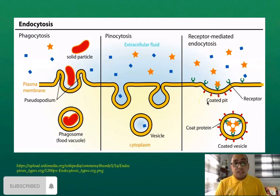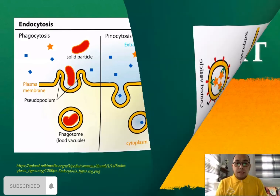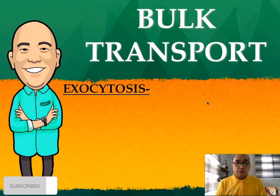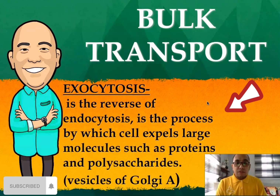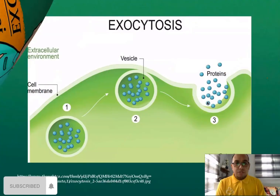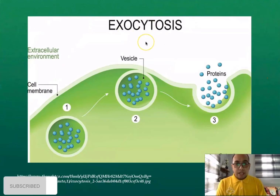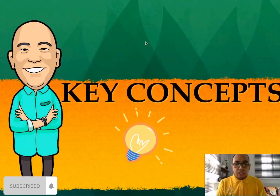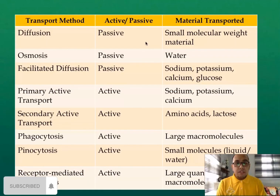For the last one, we have exocytosis — 'exo' means exit. It is the reverse of endocytosis, the process by which the cell expels large molecules such as proteins and polysaccharides with the help of vesicles from the Golgi apparatus. This is the diagram of exocytosis.